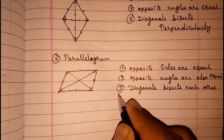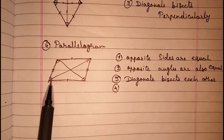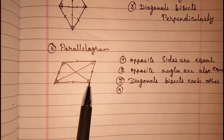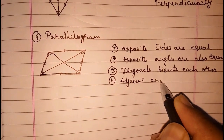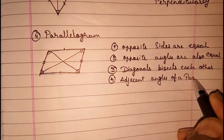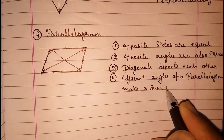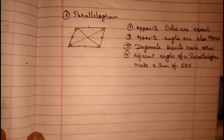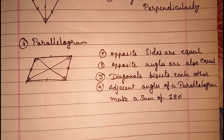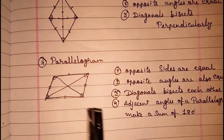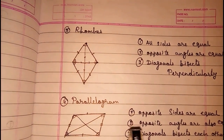The fourth point is the most important point, because it will be very useful. The adjacent angles of a parallelogram always make a sum of 180 degrees. Out of all these quadrilaterals, parallelogram is the most important quadrilateral, because all the properties of a parallelogram are found inside rectangle, square, and rhombus as well. So this is the most important quadrilateral.